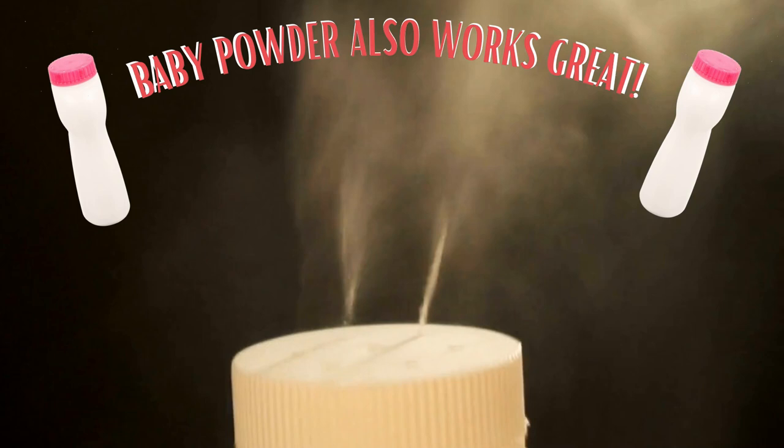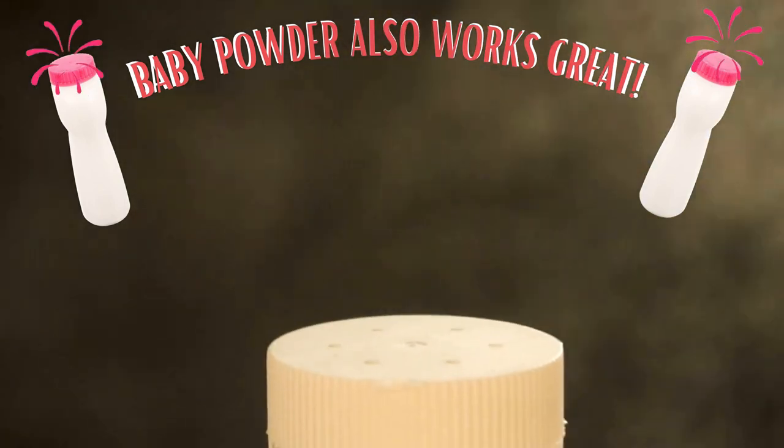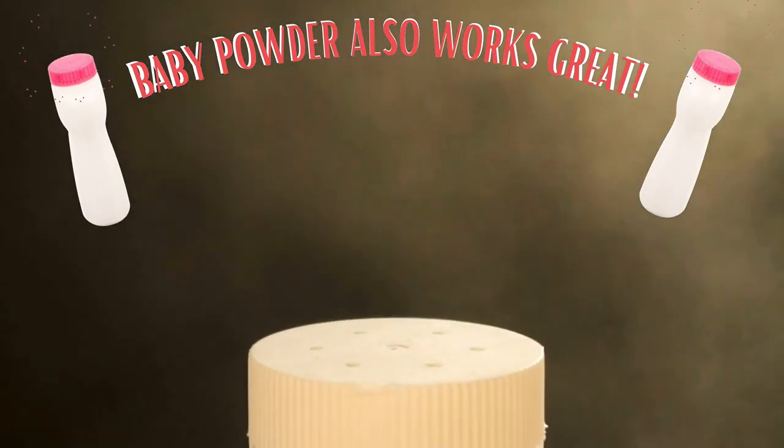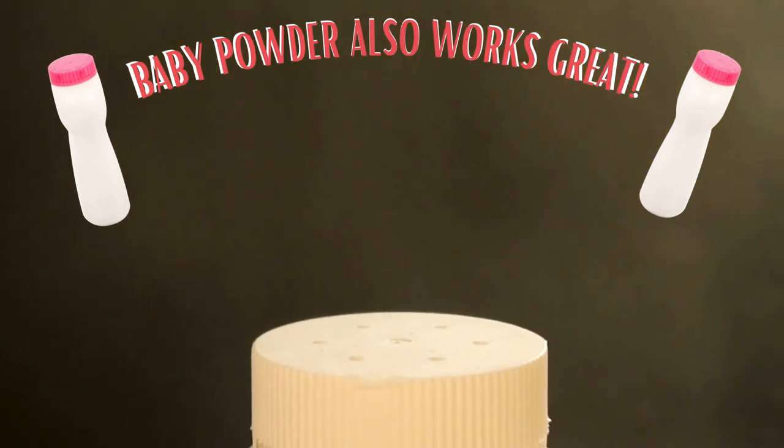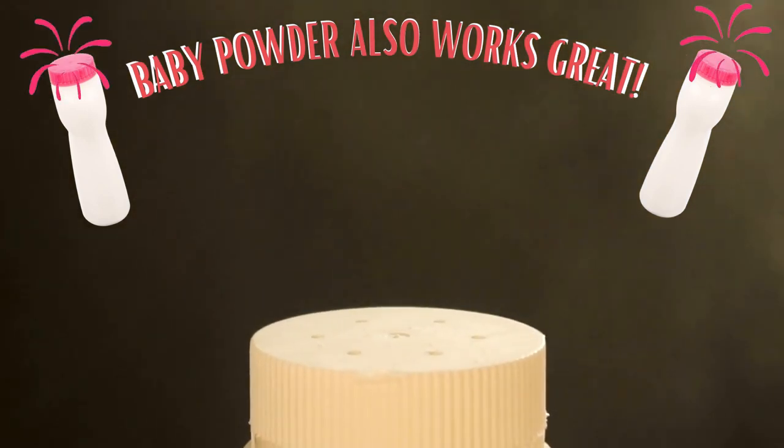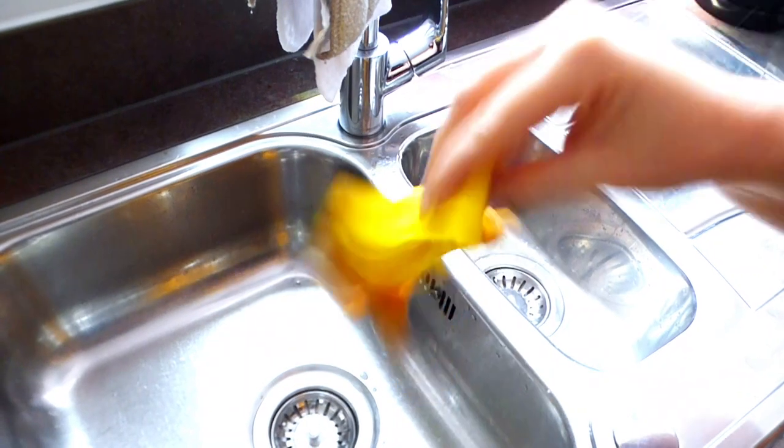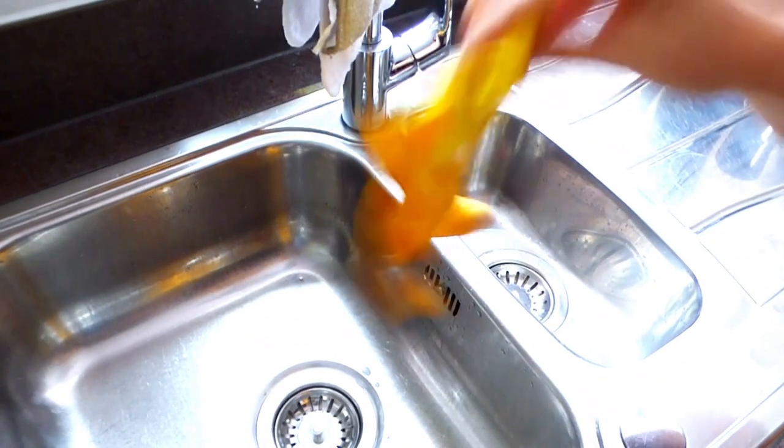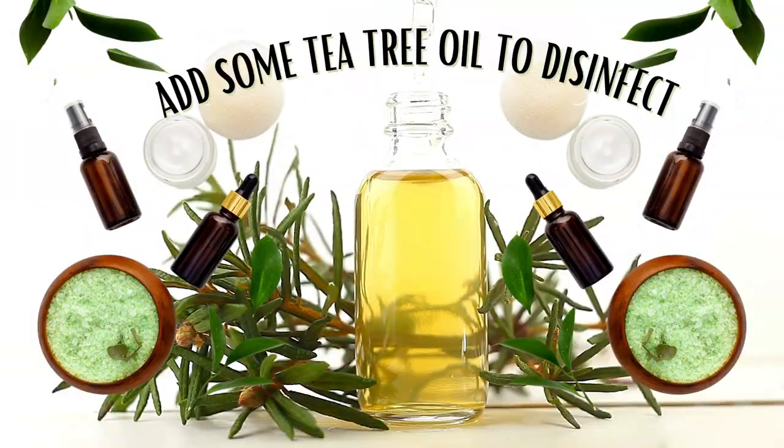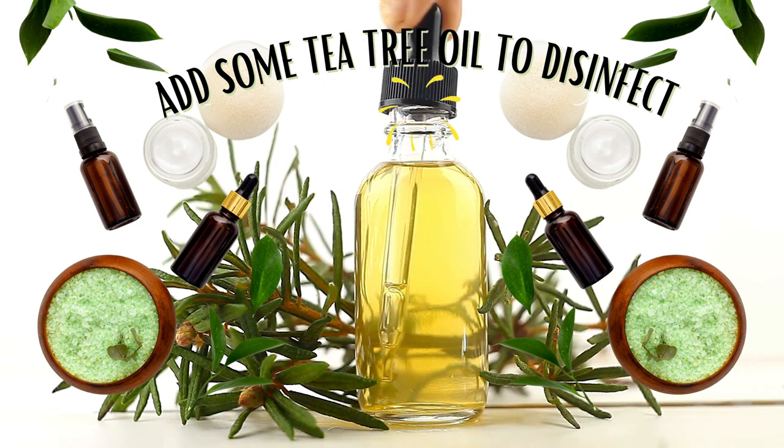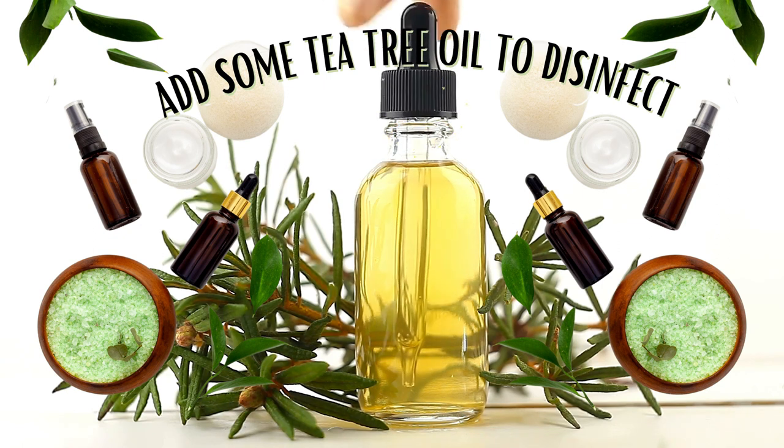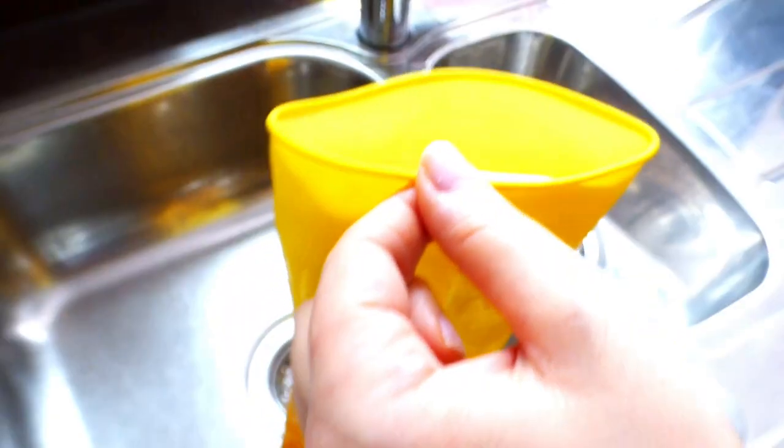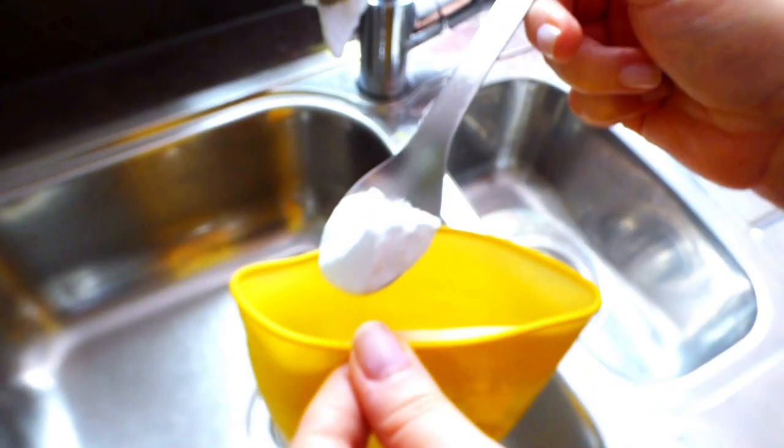An alternative to this particular hack is baby powder. You can go ahead and fill your gloves up with a tablespoon of baby powder. Again, give it a good shake and it is a good idea as well, if you are using baby powder, to add some tea tree oil just because this has antibacterial fighting properties.